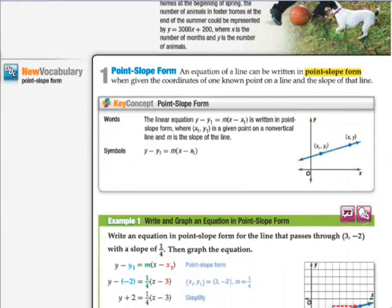Point-slope form looks like this. This is the general form right here of point-slope form: it's y minus y₁, which is just any y value from the line, equals m, which is the slope, times x minus x₁, and x₁ is the corresponding x value to the y coordinate that we already have.